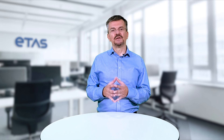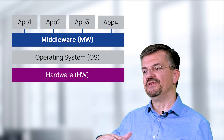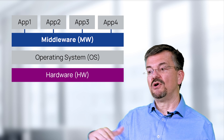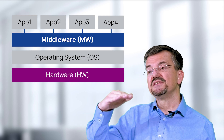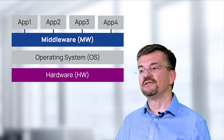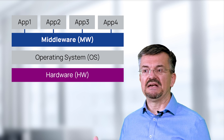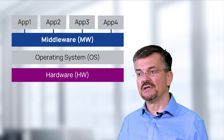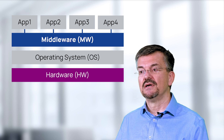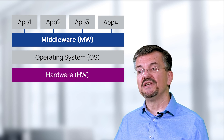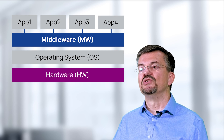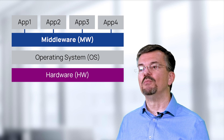But before I give you more details about our solution, let me shortly define what I understand when I talk about middleware solutions. As you can see on the graphic, we have the hardware, and on top of the hardware our operating system, and on top of this operating system we have the middleware solution. On top of the middleware solutions, we have all the different ADAS applications — such as video perception, radar perception, but also driving and parking functions. The middleware is making sure that all these applications can talk to each other, so the middleware is the communication backbone of the complete system.